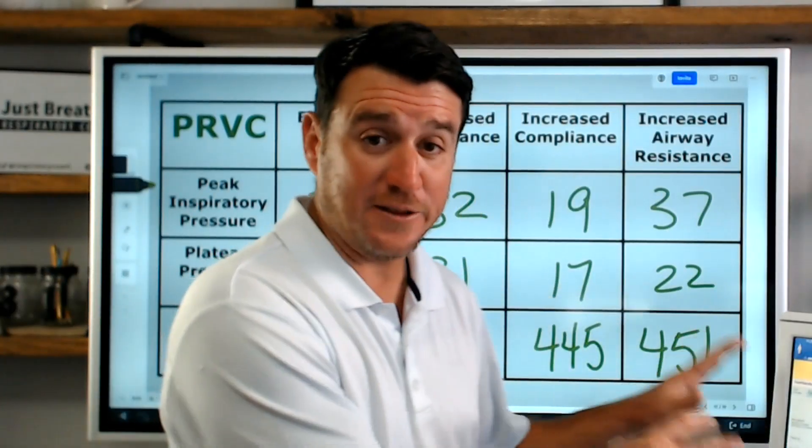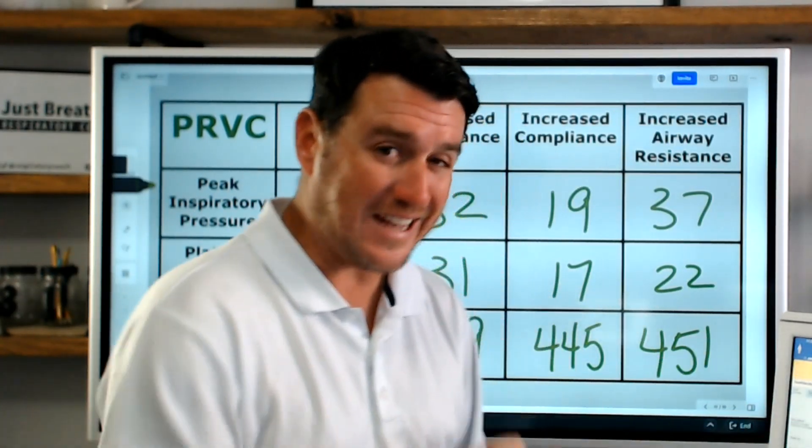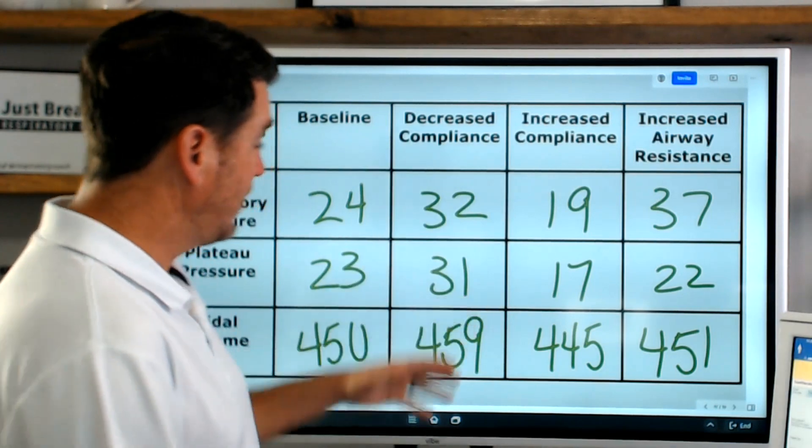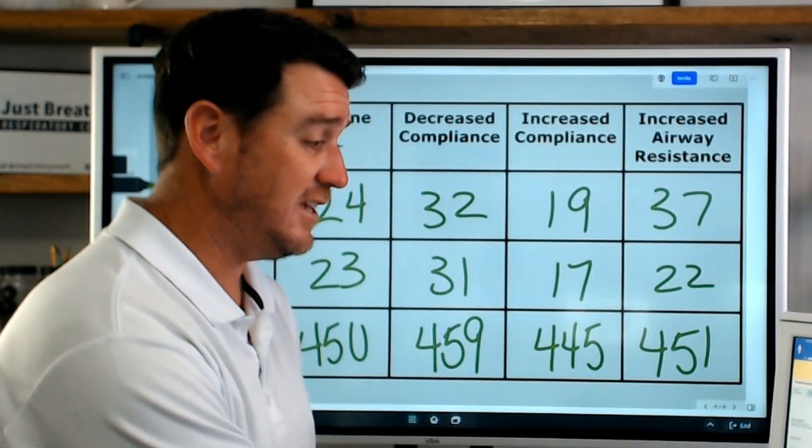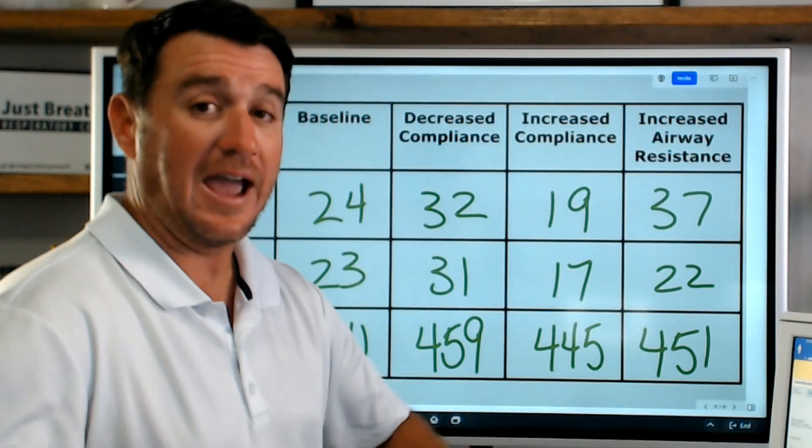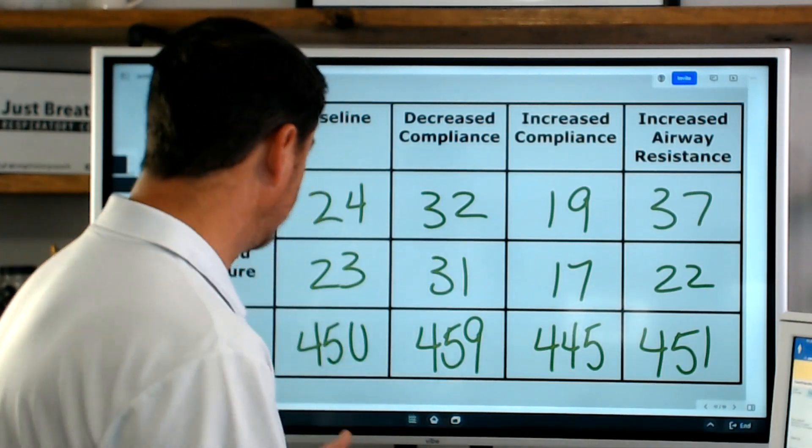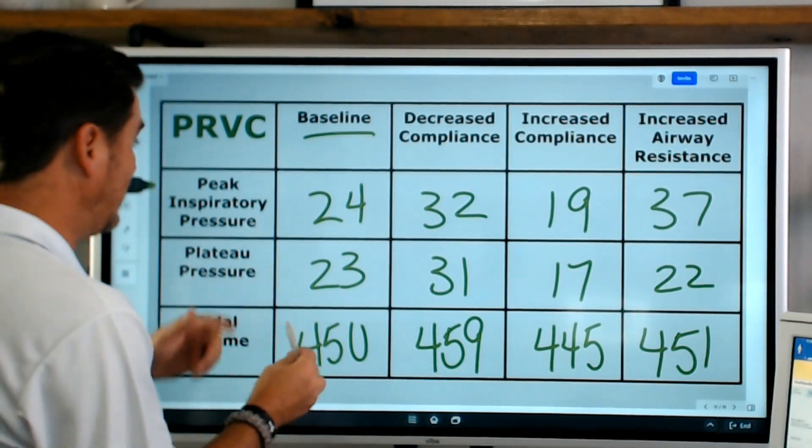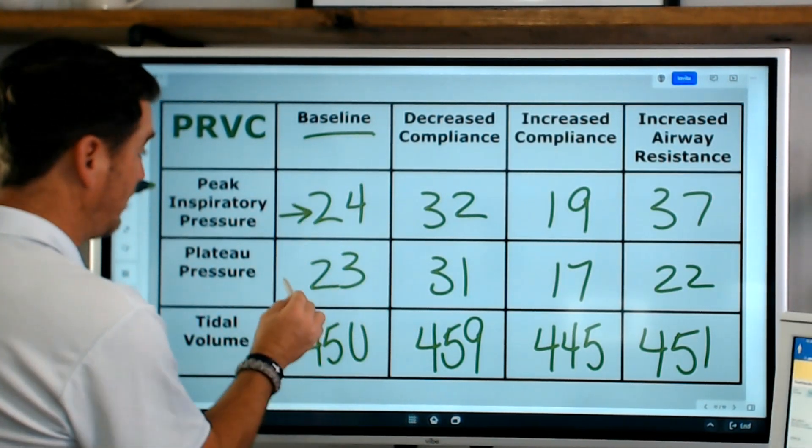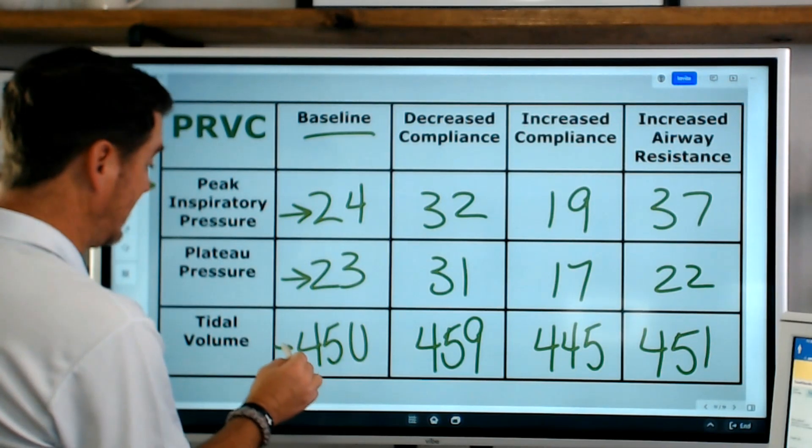All right. So we've been looking at the ventilator and now I've been taking notes and writing down numbers. So here's the numbers that we've collected since we've been looking at PRVC with the test lung and looking at changes in compliance and resistance. So remember, we started at baseline. We started with a peak inspiratory pressure of 24, a plateau of 23 and a tidal volume of 450.